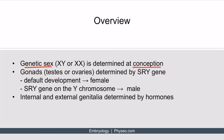The gonads, on the other hand, are determined by the presence or absence of the SRY gene. SRY stands for sex-determining region Y. The default development is for the embryo to develop female gonads. However, if the SRY gene on the Y chromosome is present, then the embryo will develop male gonads. Once the gonads have formed, they begin to produce hormones, which determines the internal and external genitalia that are formed.